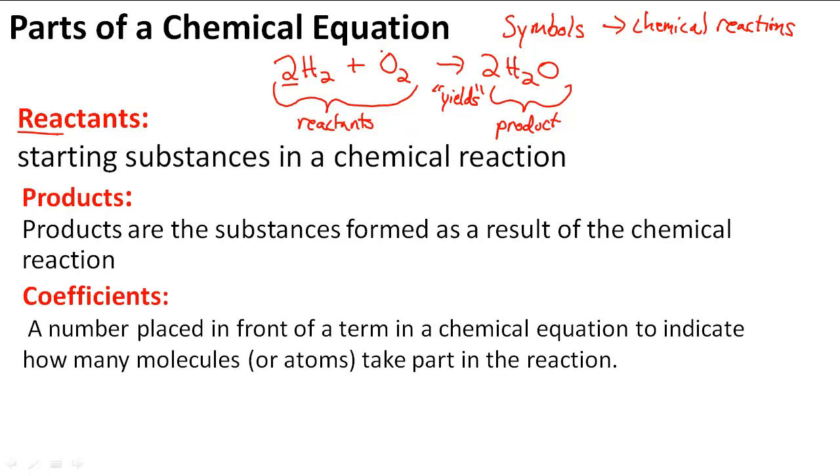If there is no coefficient listed in front of a compound or an atom in a chemical reaction or chemical equation, it means the coefficient is one. We usually don't write one. So for this reaction, the coefficient for oxygen is one.